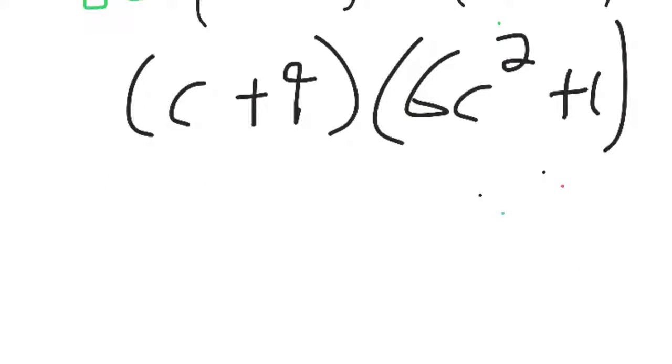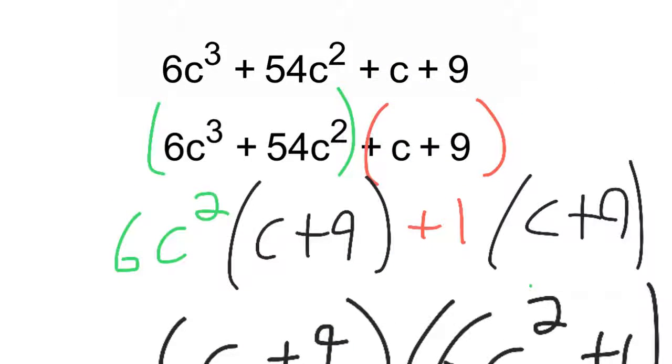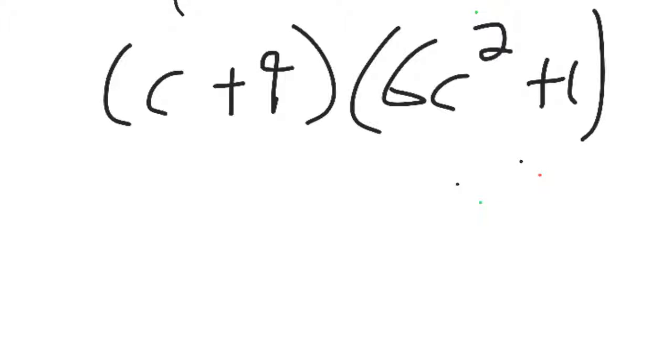And to check your work, you can take this parentheses and multiply it to this parentheses. And when you do that, if you multiply that out, you get what you started with. So, we completed our objective.